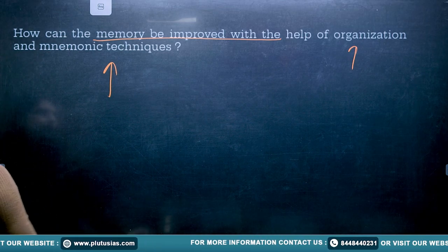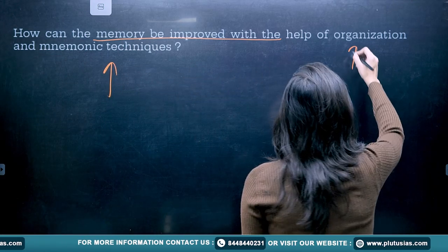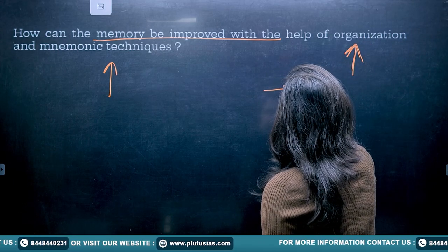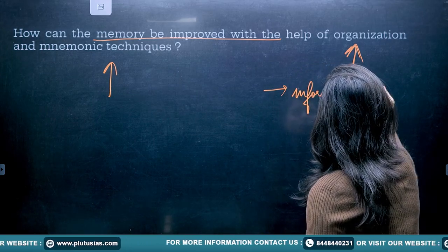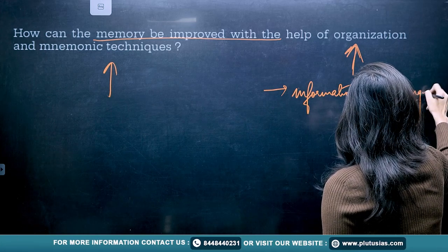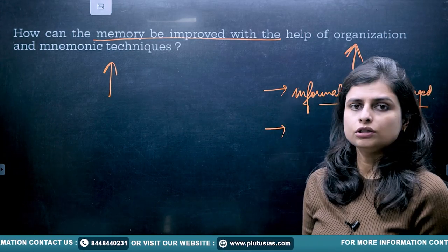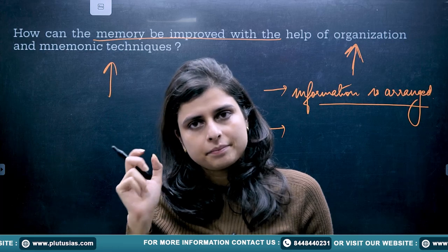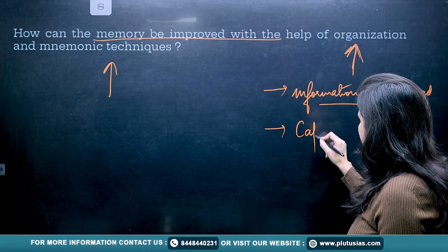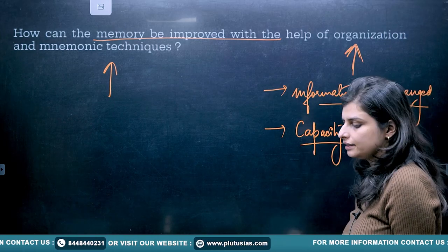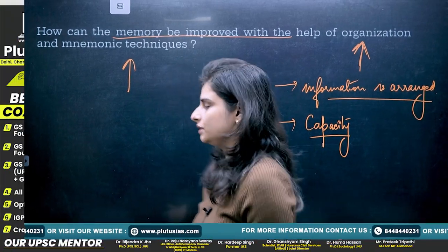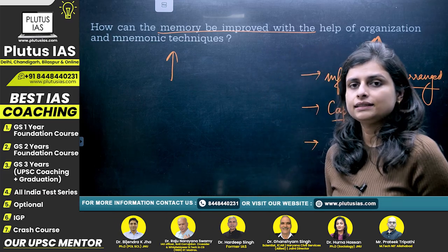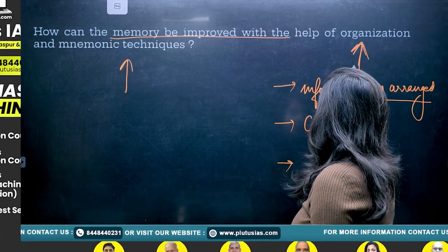The first thing about the organization role is how the information is arranged. Other than that, you are going to write about capacity — to hold certain information there is a capacity limit. For example, the phone numbers we remember are 10-digit numbers. You can talk about the capacity of information being stored, and you can also talk about mnemonic techniques within the organization part as well.